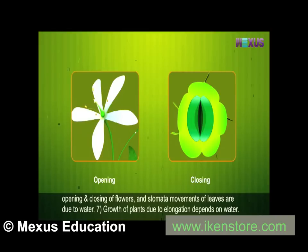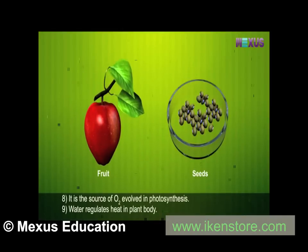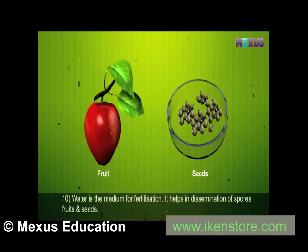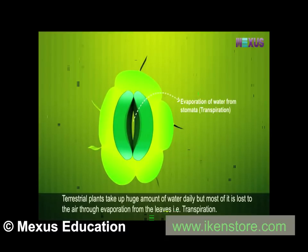Growth of plants due to elongation depends on water. Water is a source of O₂ evolved in photosynthesis. Water regulates heat in the plant body. Water is a medium for fertilization. It helps in dissemination of spores, fruits, and seeds. Terrestrial plants take up a huge amount of water daily, but most of it is lost to the air through evaporation from the leaves — that is, transpiration.